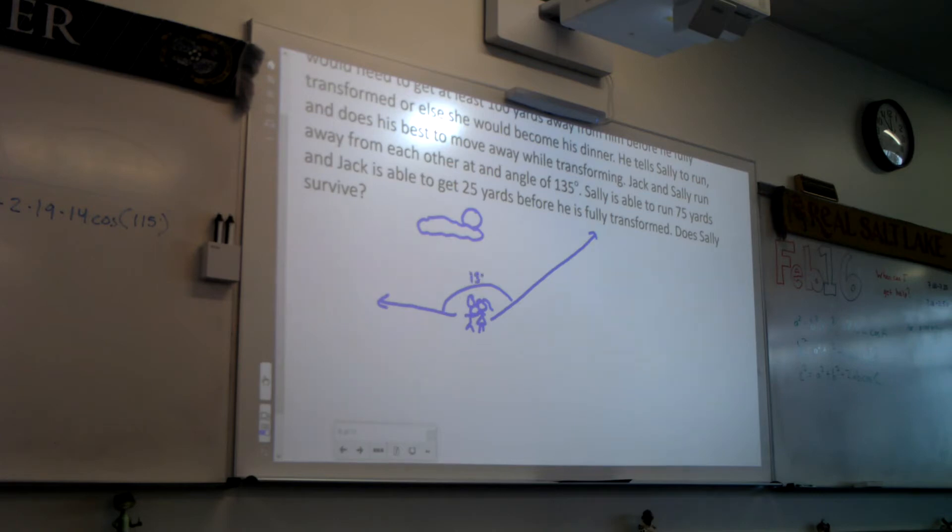Now how far did Jack make it? Jack is 25 yards. Why didn't he make it very far? As we know from movies, that's a painful process, so he can't really move but he's trying to get away. Sally was able to make it 75 yards. She could have made it further but she was wearing high heels and didn't think to take them off.